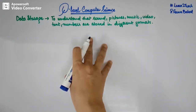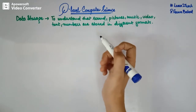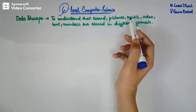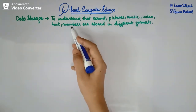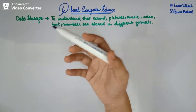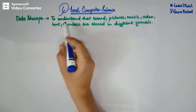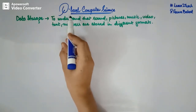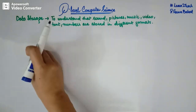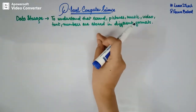Today we are formally starting the topic of data storage. In this video I am going to tell you about different file types like sound, pictures, music, videos, text, and numbers. These are the different types of files that are basically stored in different file formats. We are going to understand that for different types of files, we have different types of file formats in order to store them.